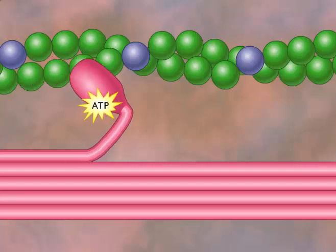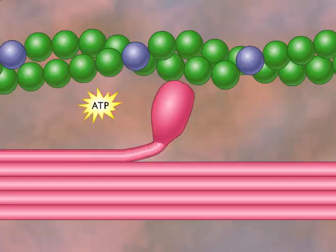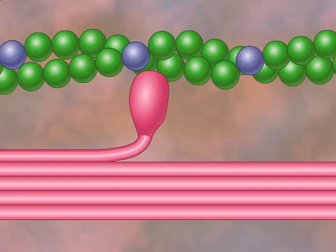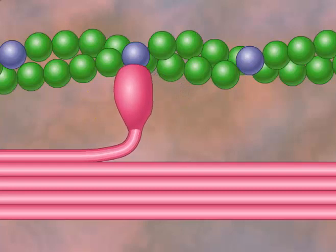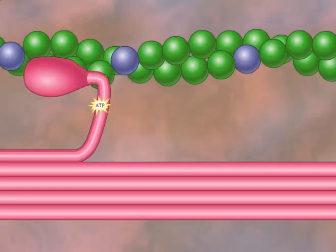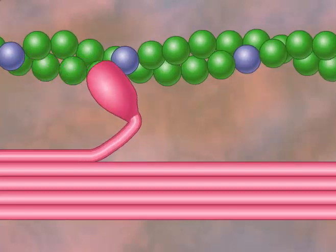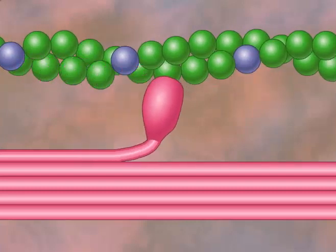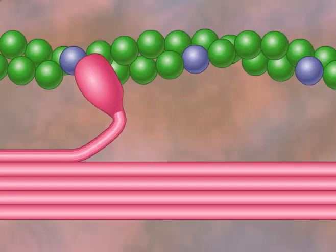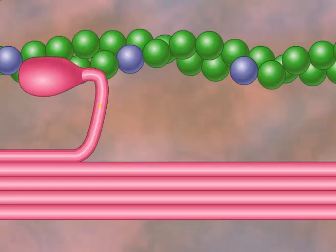Then the myosin head releases from the actin and unflexes, a change that is powered by ATP. This frees the myosin head to bind with a different actin molecule farther up the actin filament. The entire process may then be repeated many times. The myosin, in effect, walks along the actin filament, moving the actin filament more each time.